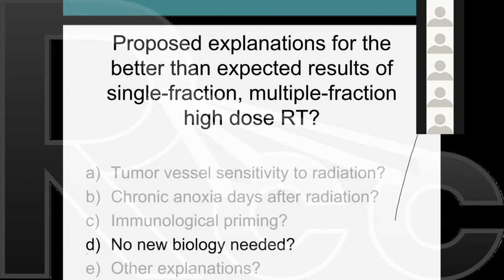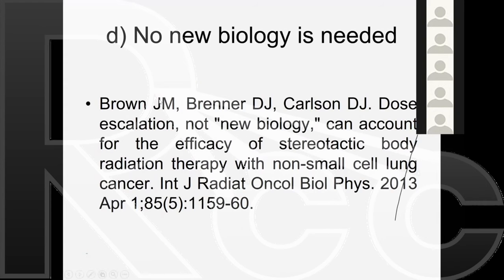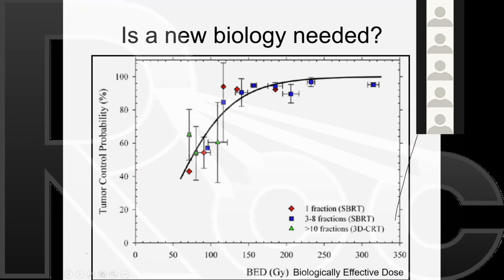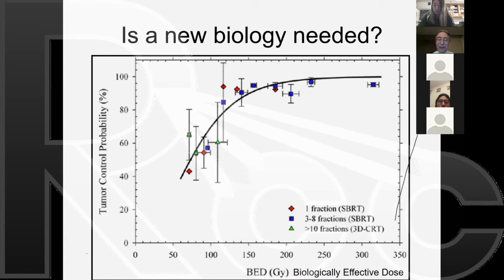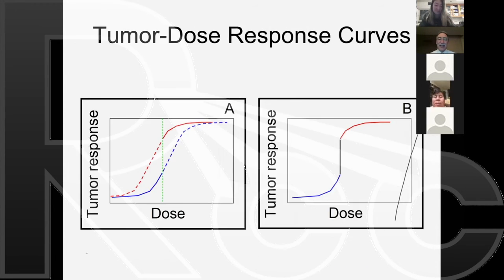A group of very senior scientists—Martin Brown at Stanford, David Brenner, and David Carlson, both at Columbia—argue that no new biology is needed at all and everything can be explained by the linear quadratic model. They went back to all previously published data, plotted tumor control probability as a function of radiation dose whether given as single or multiple fractions, and found that a single curve using the linear quadratic alpha-beta model could explain all the data. Case closed, according to them: no new mechanism is needed.